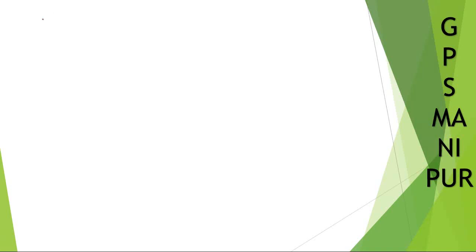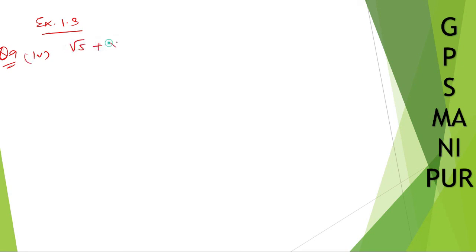Now we are doing exercise 1.3, question number 9, roman number 4: root 5 plus root 3 divided by 4 minus root 15.